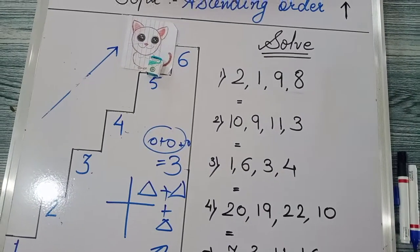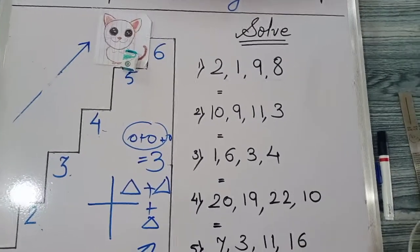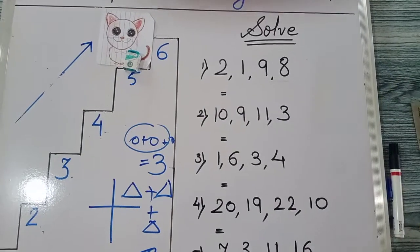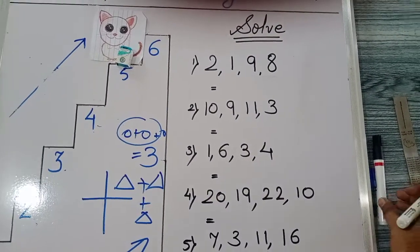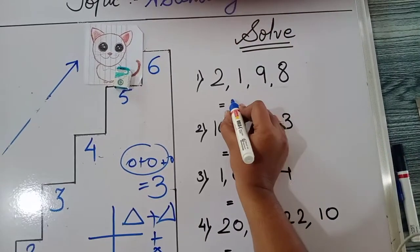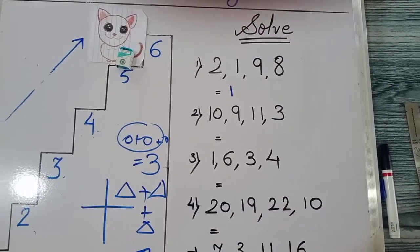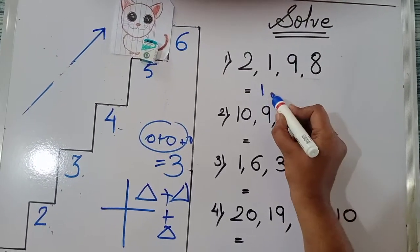So kids, we will solve this exercise. We will solve first number. 2, 1, 9 and 8. So tell me which one will be the first number. Sab se pehle korn sa number aega? Sab se pehle aane wala hai. 1. Now, after 1, which number is going to be? 2.